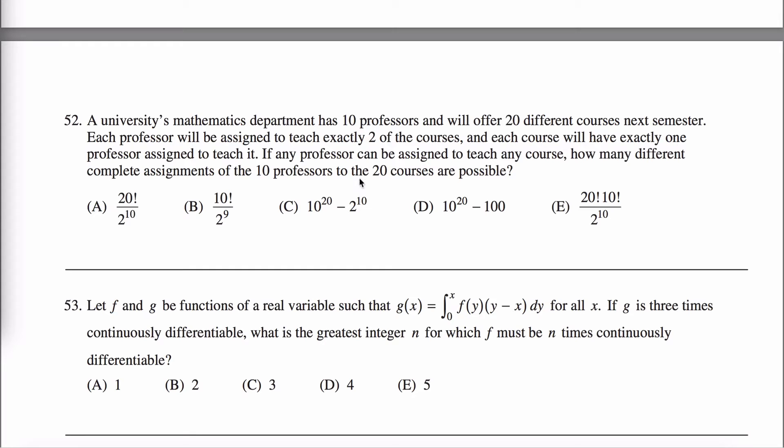I guess if you like combinatorics, which I do. So what's going on here is we have a math department that has 10 professors and the department's going to offer 20 courses and the question is how many different ways can the courses be assigned to the professors?